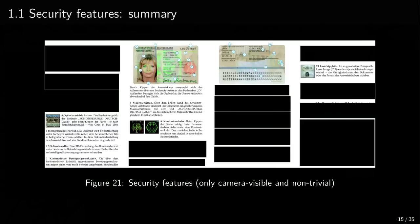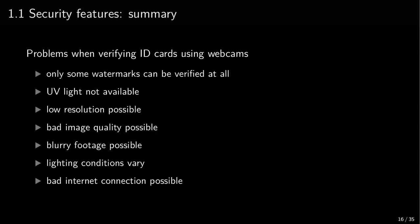These seven features are the hard part because you can see them on a webcam and they're dynamic — when you tilt the card they have to change somehow. That's what you really need to fake. To sum up the security features: only some features can be verified; UV light is not available for video identification. And when we want to fake a video identification, we can enforce low resolution, make bad image quality with compression artifacts, make the footage blurry, use bad lighting conditions, or drop some frames — bad internet. So we are on the easy side of the webcam.